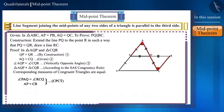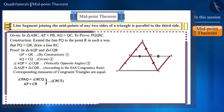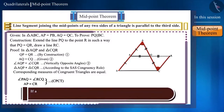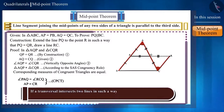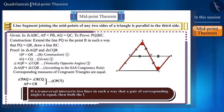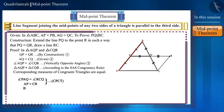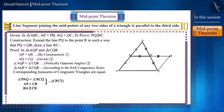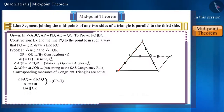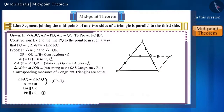These two angles are alternate angles, which are formed by the intersection of the sides BA and CR with the transversal AC. If a transversal intersects two lines such that a pair of alternate angles is equal, then both lines are parallel to each other. Hence, side BA will be parallel to side CR. As we can see in the figure, points B, P and A are on the same line. Therefore, side PB will also be parallel to side CR.